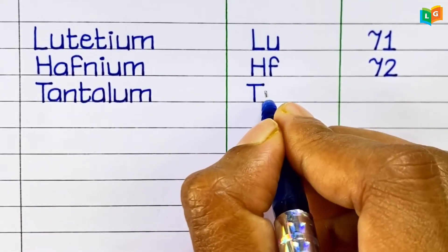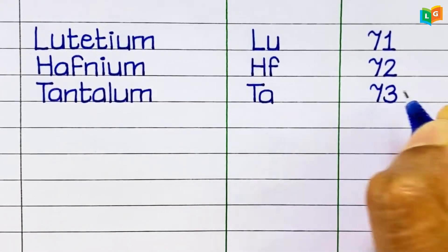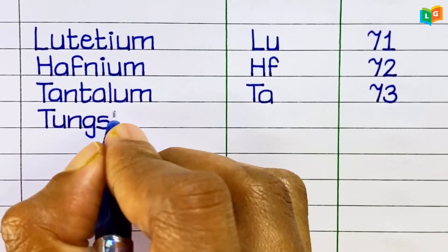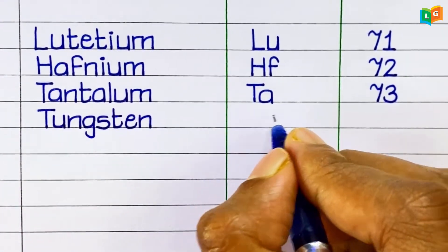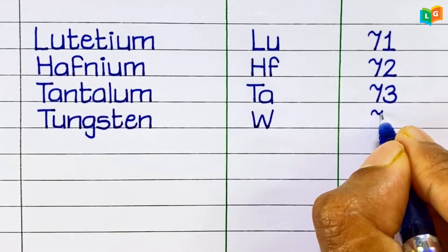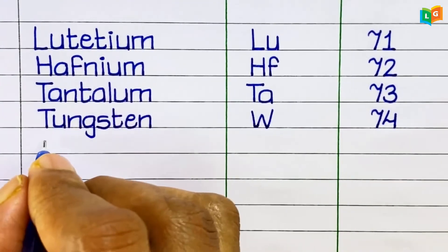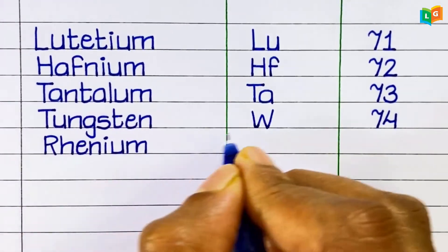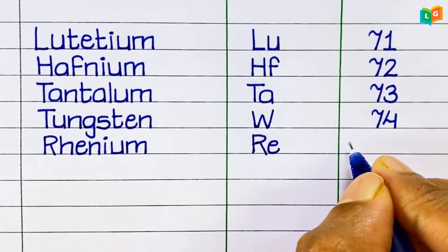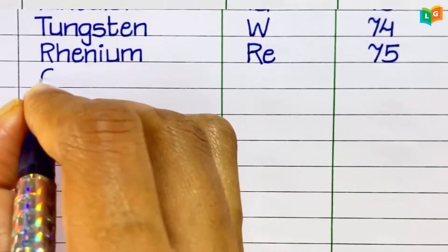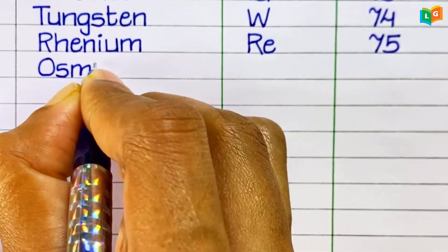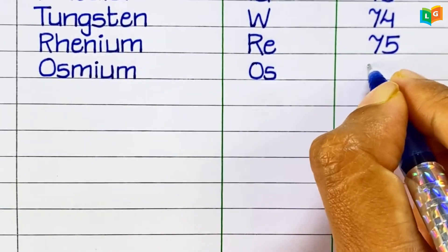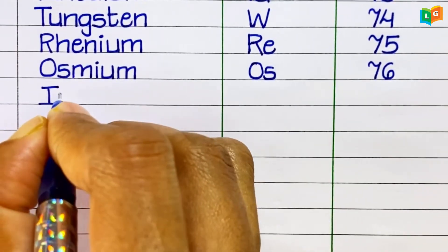Tantalum, symbol Ta, atomic number 73. Tungsten, symbol W, atomic number 74. Rhenium, symbol Re, atomic number 75. Osmium, symbol Os, atomic number 76.